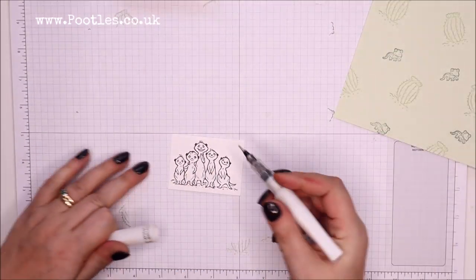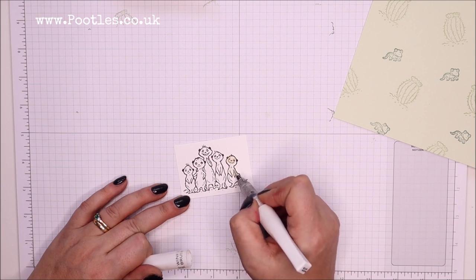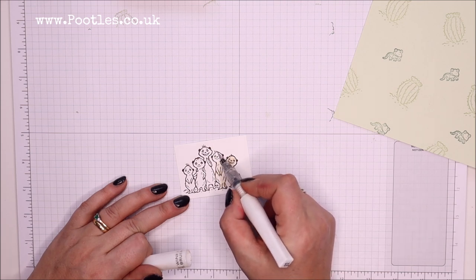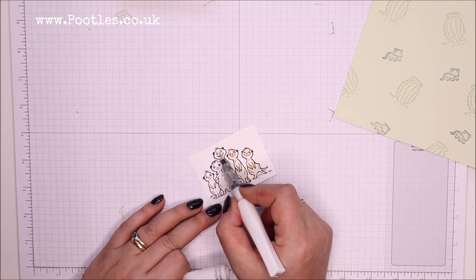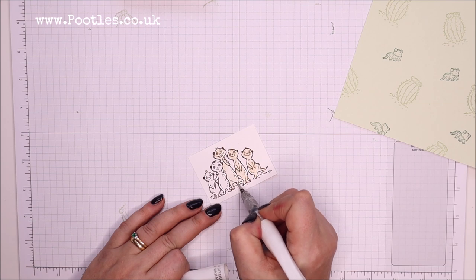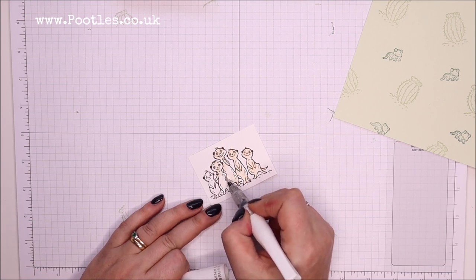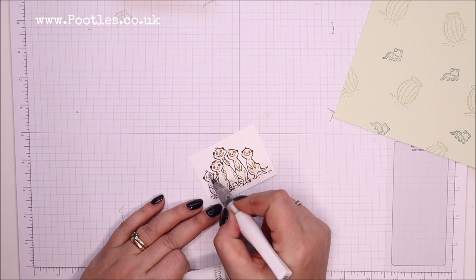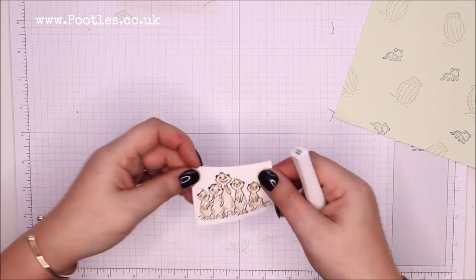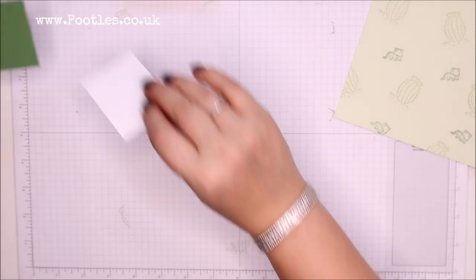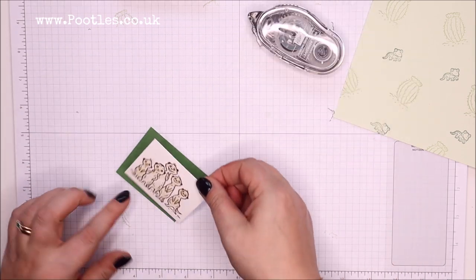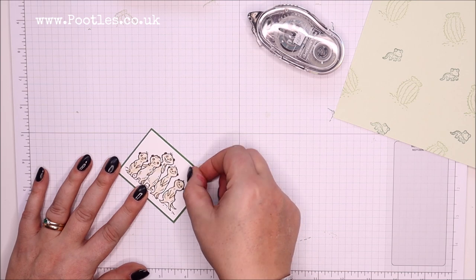While the ink's wet, Wink of Stella, because you know, glittery meerkats, why not? You could use an aqua painter. Mine are on the other side of the room. I use my aqua painters actually to seal envelopes. I send lots of stuff out to my team each month and they go in envelopes. And I don't want to spend hours licking and sticking, so I use an aqua painter. But that's just cute. Let's give them a little bit of color on their bodies. And I might as well snail this on while I'm here.